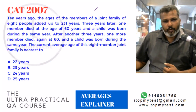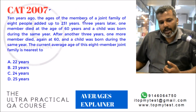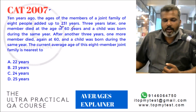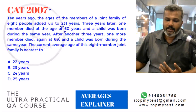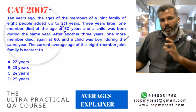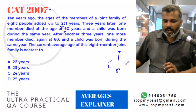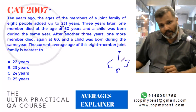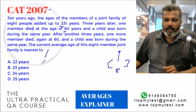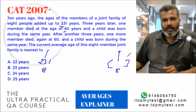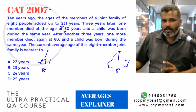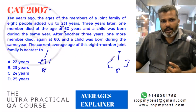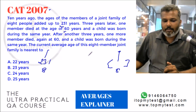Now let's look at a question from CAT 2007: 10 years ago the ages of the members of a joint family of 8 added up to 231 years. Three years later one member died at age 60 and a child was born. After another three years one more member died again at 60 and a child was born. The current average age of the eight-member family is nearest to what? Today there are eight members, so if we find the sum of their ages we can find the average. 10 years ago the sum was 231 — if the same eight members were alive, each would age 10 years, increasing the sum by 80.